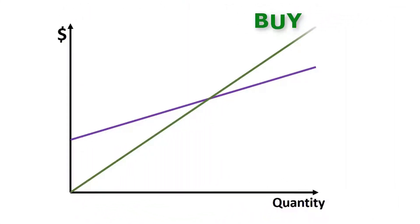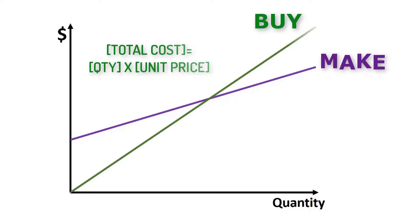In the graph, we have the buy alternative represented in green and the make alternative in purple. The fixed cost for the buy alternative is almost zero. Therefore, the total cost depends on the quantity purchased times the unit price.